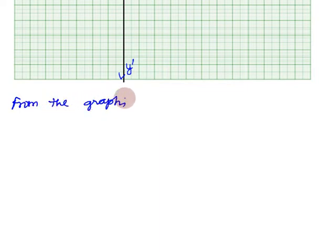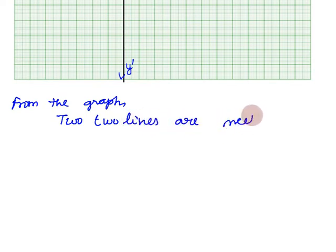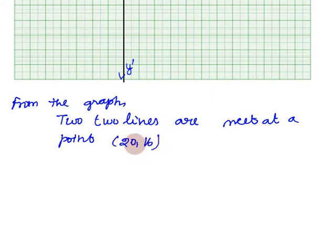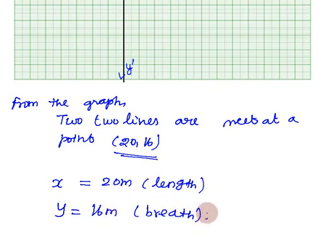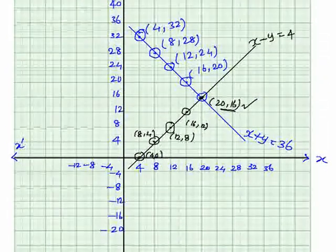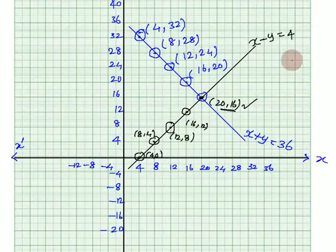From the graph, the two lines meet at the point (20, 16), which is the solution. Therefore, x equals 20 meters, which is the length of the garden, and y equals 16 meters, which is the breadth of the garden. Thank you students, please subscribe.